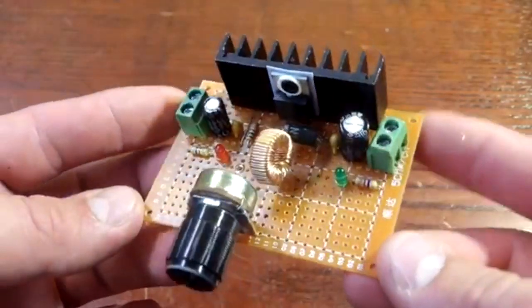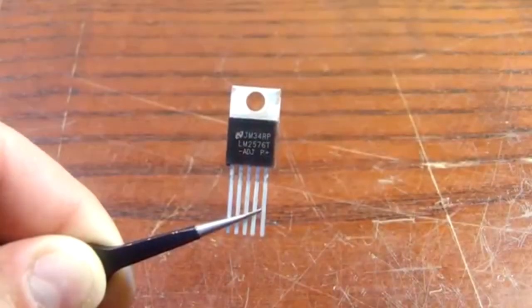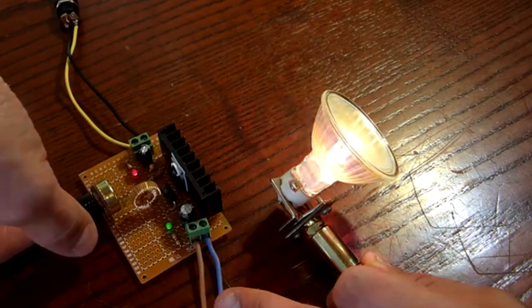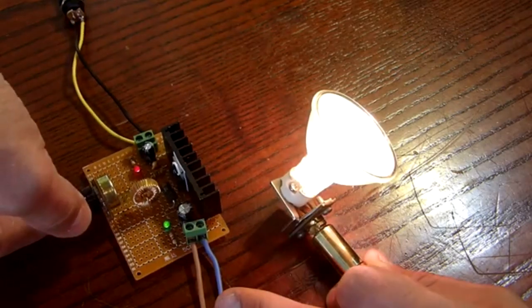Hey guys and welcome back to the channel. In the last video I showed you how to make a very simple and powerful mini buck converter which was based on LM2576, but it has a drawback - it doesn't feature any CC or constant current capability.